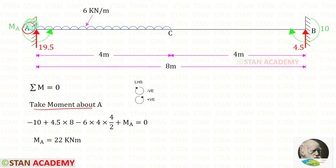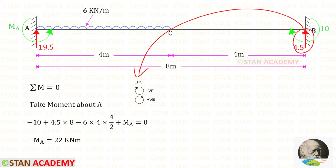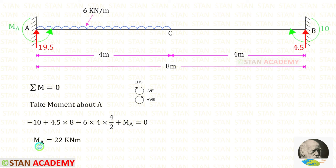Now let us take moments about A and find Ma, following the left-hand side rule: clockwise is negative, anti-clockwise is positive. Mb is clockwise (negative); Rb acts anti-clockwise with distance 8 (positive); the UDL is clockwise (negative), multiplied by distance and distance-by-2. Assuming Ma acts anti-clockwise (positive), we get a positive value, confirming Ma acts in the anti-clockwise direction.